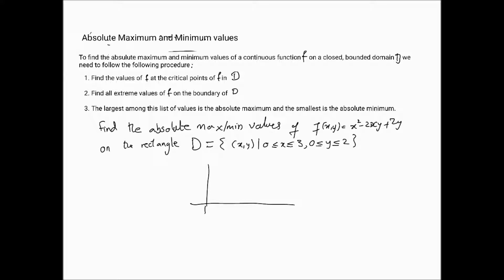D will have x going from 0 to 3, and y going up to 2. The domain is a rectangular boundary. The corners are (0,0), (3,0), (3,2), and (0,2). The boundary of D is what's shown in red — that is our domain D.